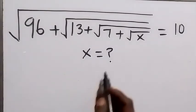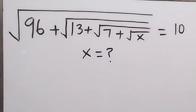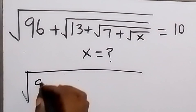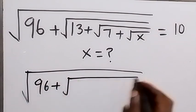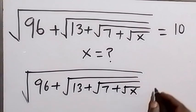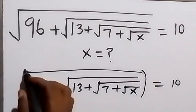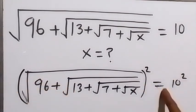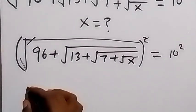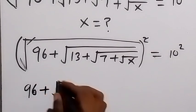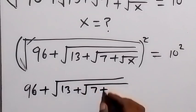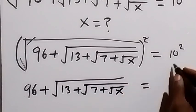Hello, you are welcome. How to find x in this nice algebra equation. From here we can square both sides. We have square root of 96 plus square root of 13 plus square root of 7 plus square root of x, equals 10. When we square both sides, the square cancels the square root, giving us 96 plus square root of 13 plus square root of 7 plus square root of x, equals 10 squared, which gives us 100.